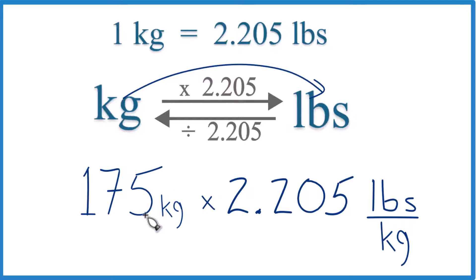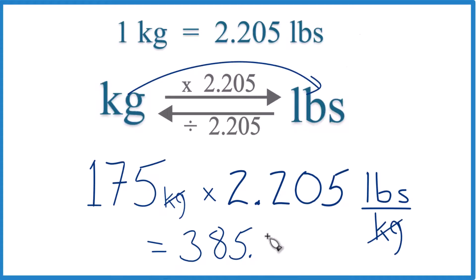We multiply kilograms on the top and bottom. They're gone. So it's just 175 times 2.205 pounds. Do that, we end up with 385.875. Just going to round it to 385.9.